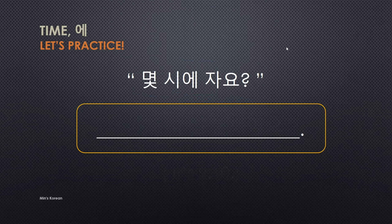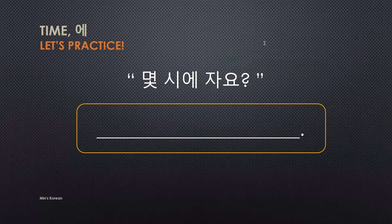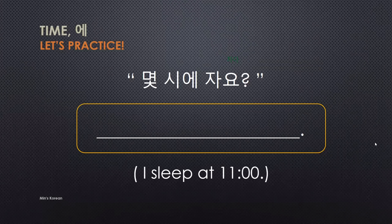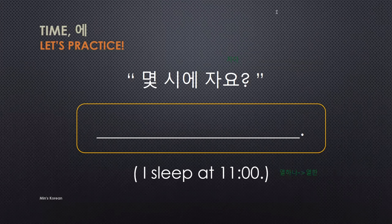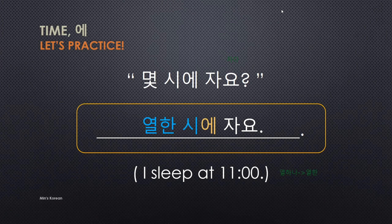I sleep at 11. 11 o'clock: 열 하나 is 11, but when saying 시 together, 하나 becomes 한, so 열 한 시. Then add 에 for the time particle, and 자요 for sleep: 열 한 시에 자요 — I sleep at 11 o'clock. So again: 몇 시에 자요? 열 한 시에 자요.